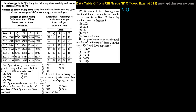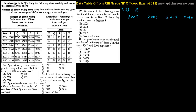Question number 38: In which of the following years was the number of defaulters of Bank R maximum among the given years? We are talking about Bank R — for which year are the defaulters maximum? The years for comparison are 2005, 2006, 2007, and 2010. First of all we have to see the number of people taking loans.